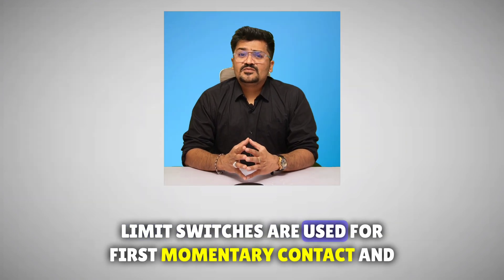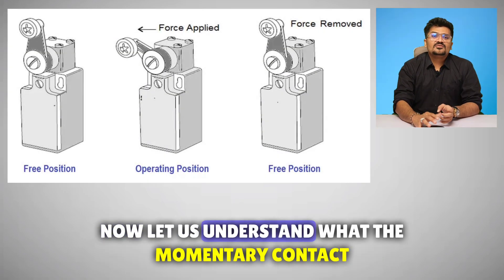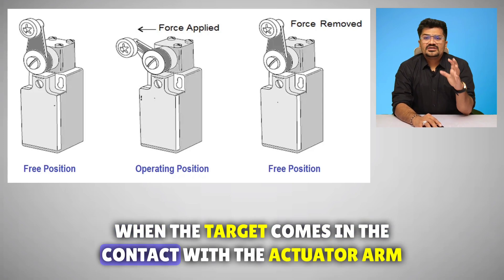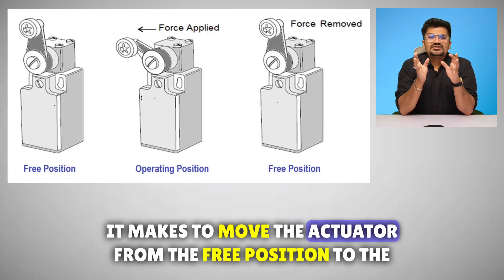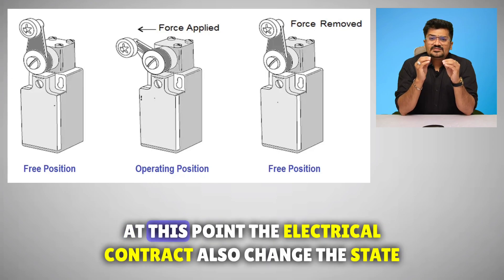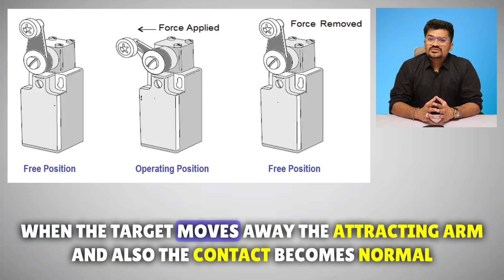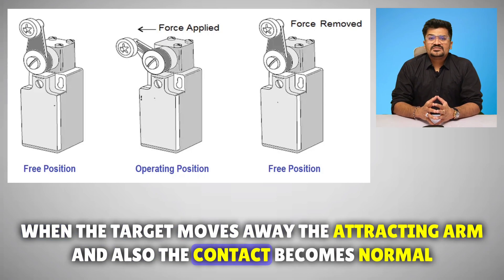Limit switches are used for two contact modes: first, momentary contact, and second, maintained contact. Momentary contact is when the target comes in contact with the actuator arm, it causes the actuator to move from the free position to the operating position. At this point, the electrical contact also changes state. When the target moves away, the actuating arm and the contacts return to normal.